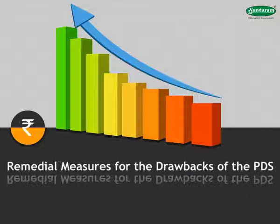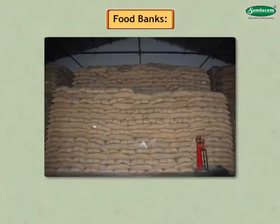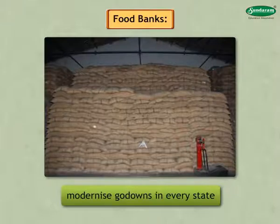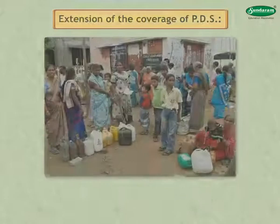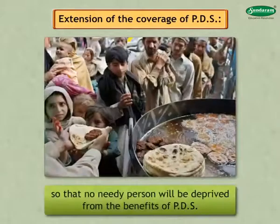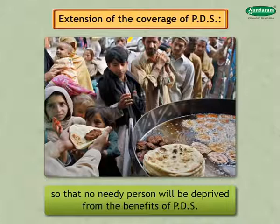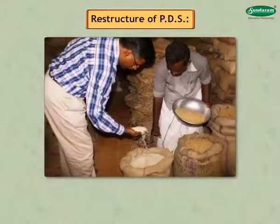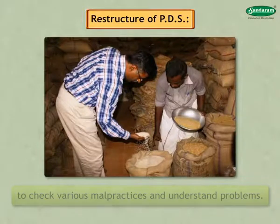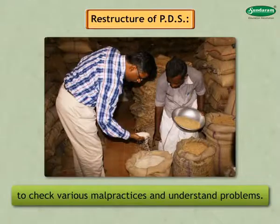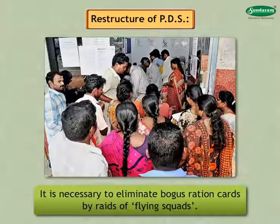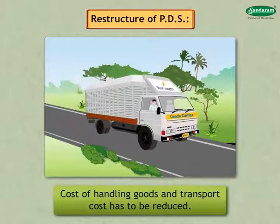Remedial measures for the drawbacks of the public distribution system include: establishing food banks and modernizing godowns in every state to store food grains properly; extending the coverage of PDS so that no needy person is deprived of its benefits; and restructuring PDS — rationing officers must visit fair price shops frequently to check malpractices, bogus ration cards must be eliminated by raids of flying squads, and the cost of handling goods and transport must be reduced.